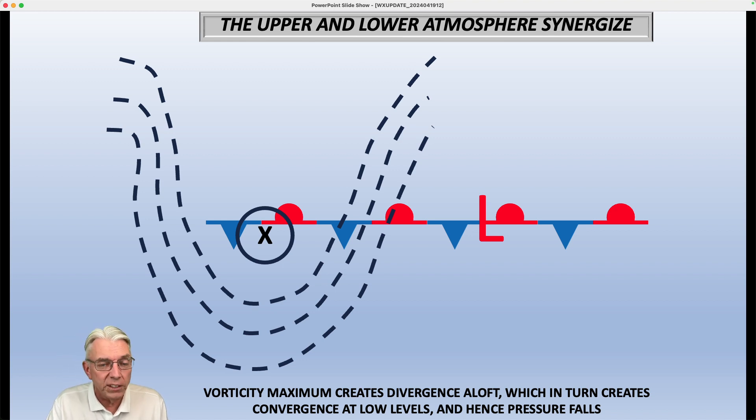And the two just feed off each other until eventually the low goes through what we call an occlusion process where it is separated from all the temperature contrast, no longer has any real source of energy, and it begins to finally fall apart. But the upper atmosphere and the lower atmosphere definitely play together a lot in the atmosphere. And this is an example or one example of that synergy, if you will. Okay, I hope that made a little bit of sense. That is the bonus weather video for this Friday.